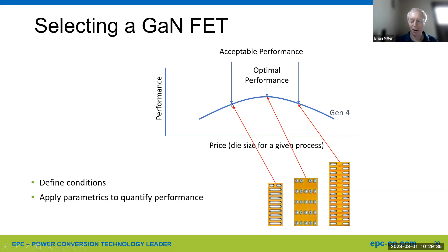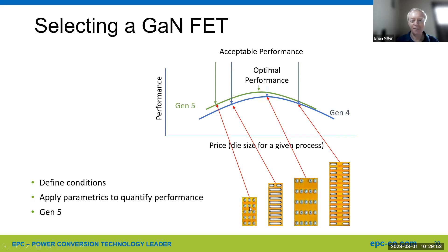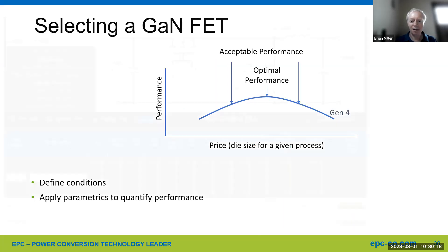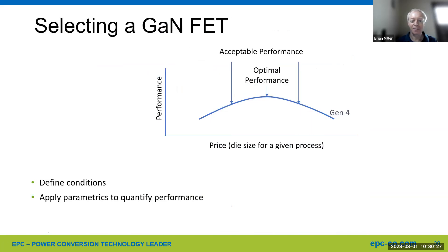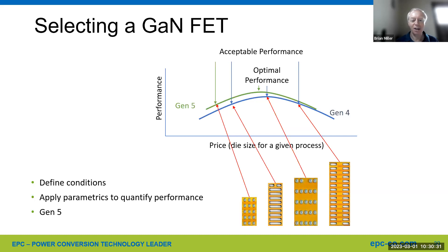The story doesn't end there: GAN keeps improving across generations. Gen 5 has been in production for a couple of years. Using the latest generation, you can select an even smaller part with essentially the same performance as before. Comparing the first FET you chose and the last one, the die size difference is quite noticeable, and the price difference is just as noticeable. Using the rank-order loss chart in the selector tool can really help narrow in on good efficiency and good cost using EPC GAN FETs.